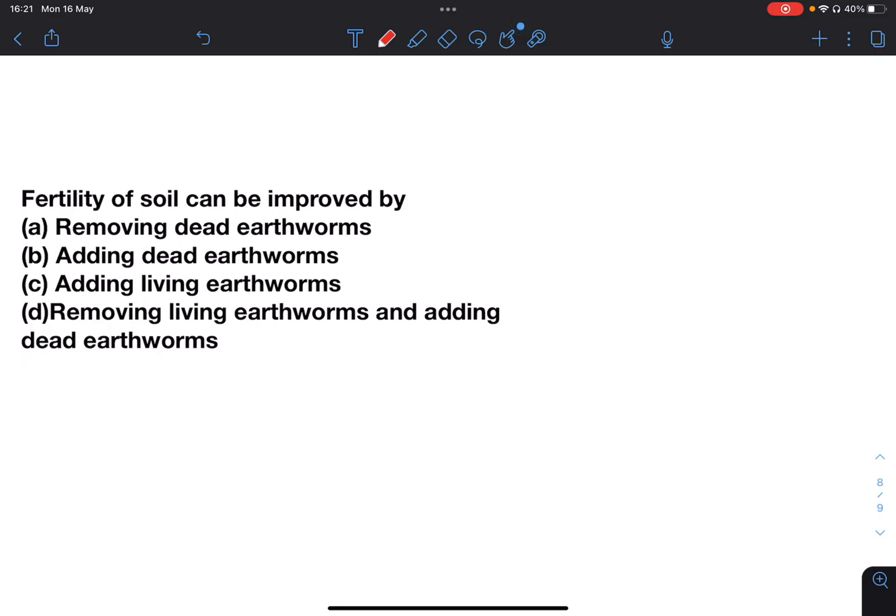Fertility of soil can be improved by removing dead earthworms, adding dead earthworms, adding living earthworms, or removing living earthworms and adding dead earthworms. Answer C, adding living earthworms.